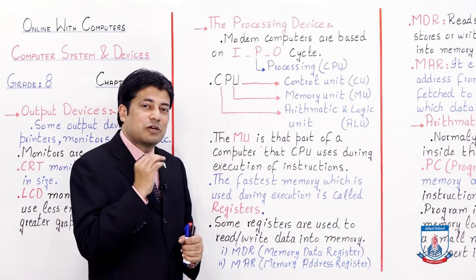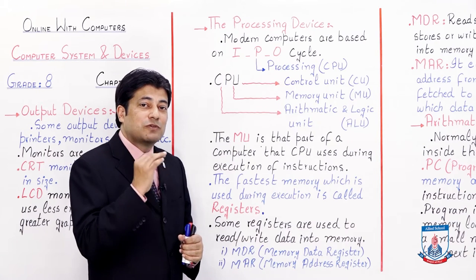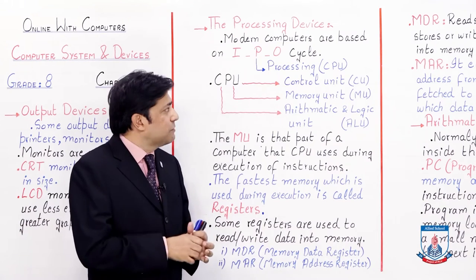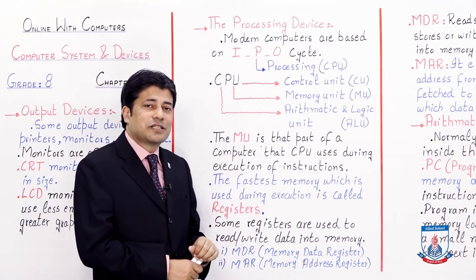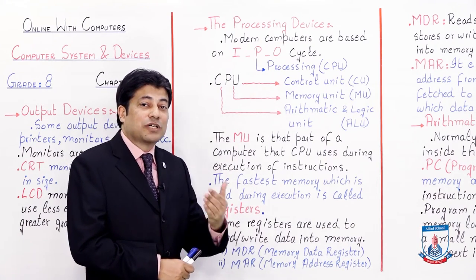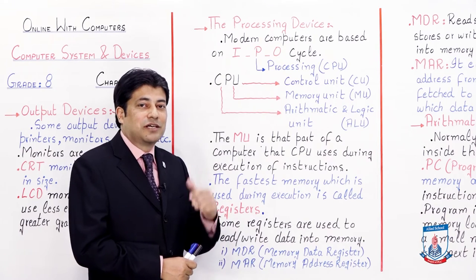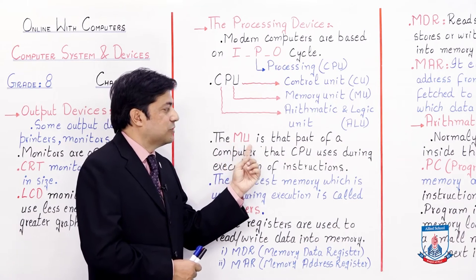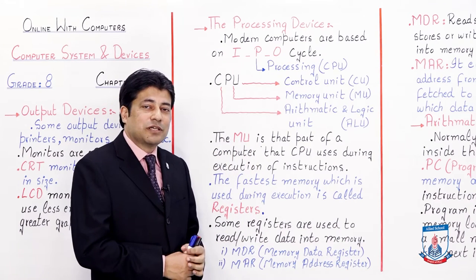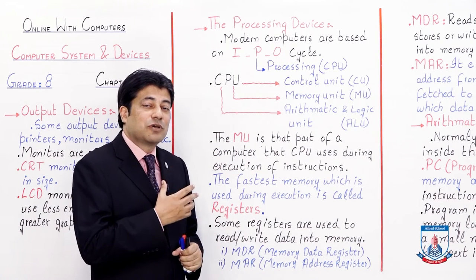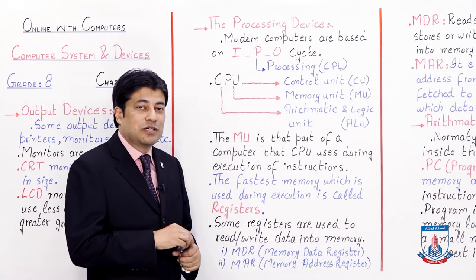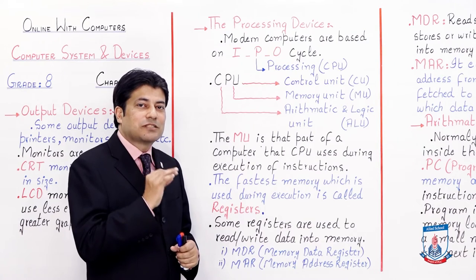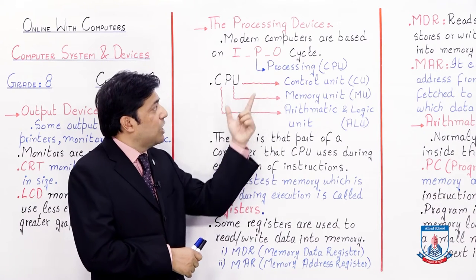When you send values and instructions to the computer, the CPU needs to store those instructions somewhere. That place is called the Memory Unit. The Memory Unit is very small in size, but it is the fastest memory in the computer — the only memory that is inside your CPU.